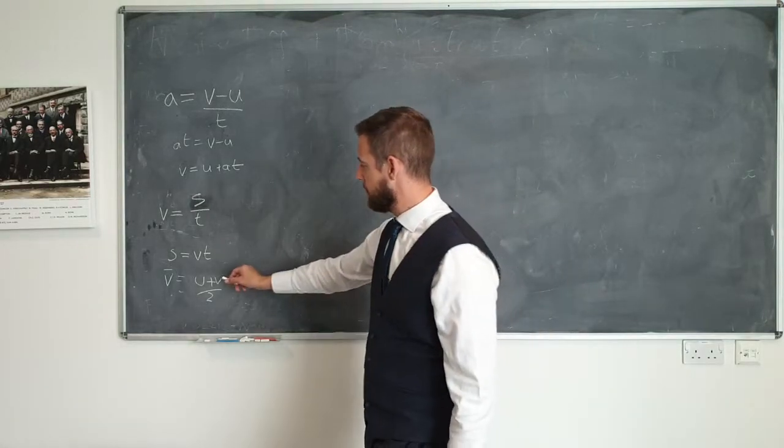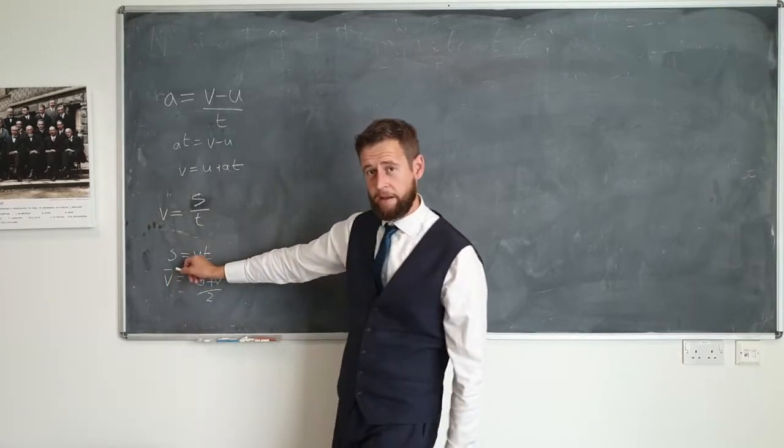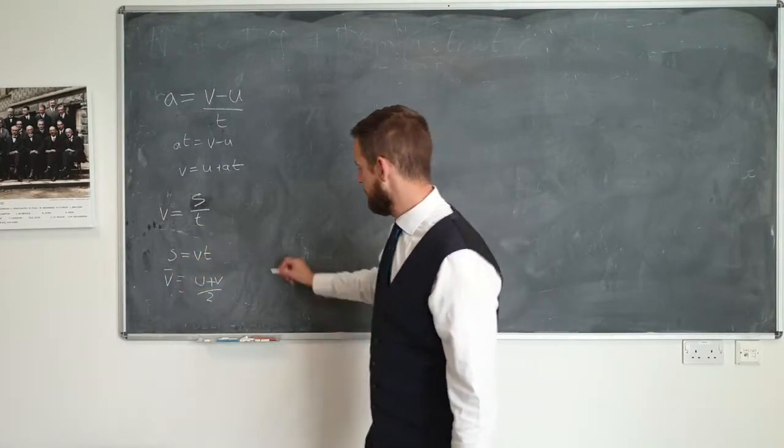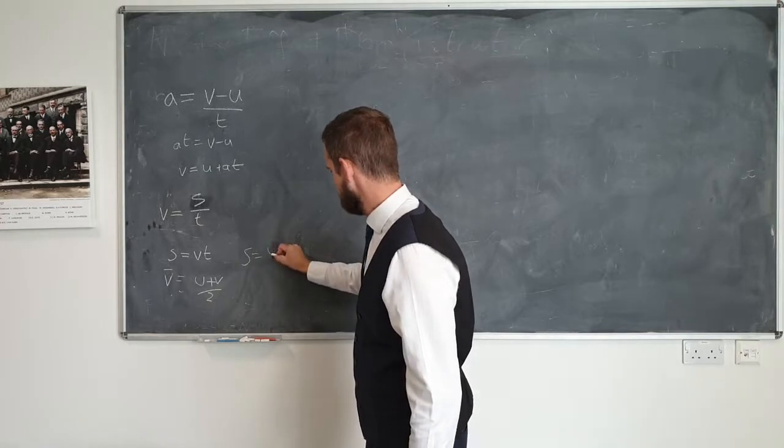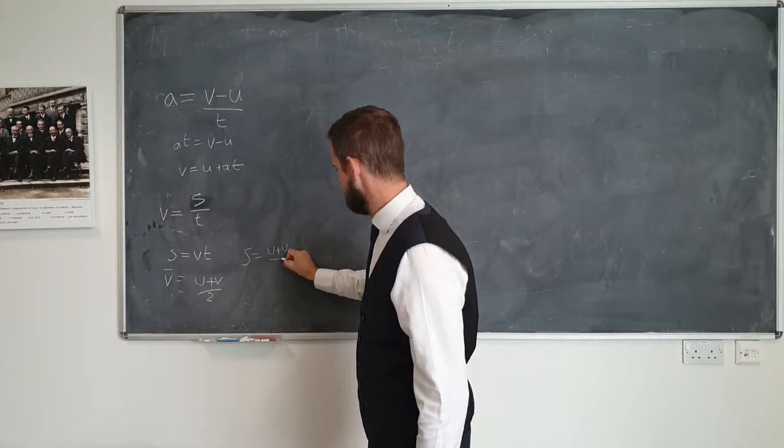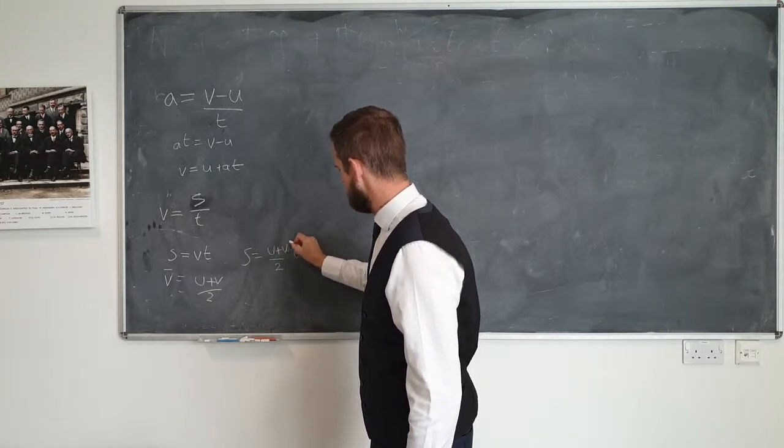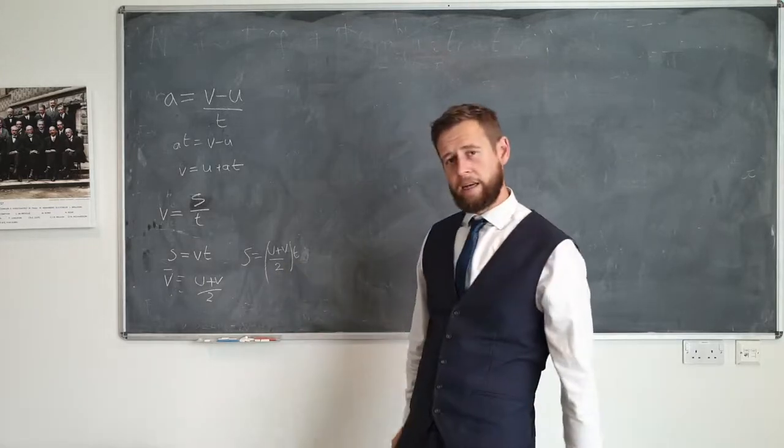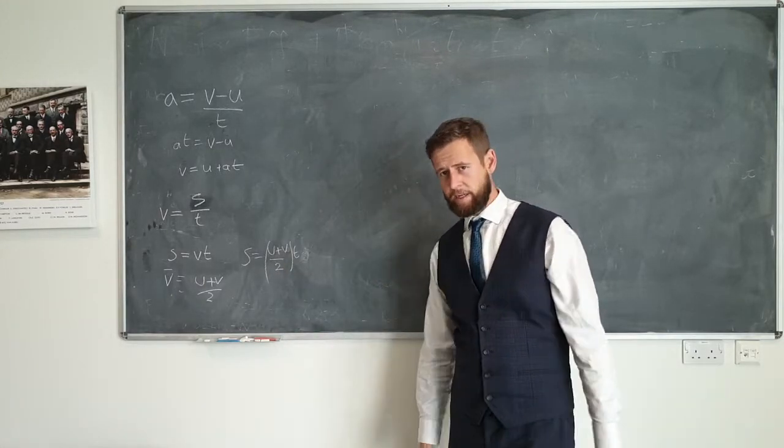If we substitute in the average velocity for where V is in this formula, then we have S equals U plus V over 2 times T. This is the second of our souvant relationships.